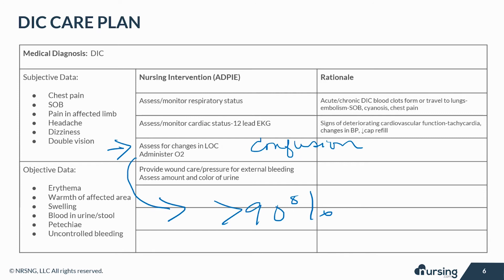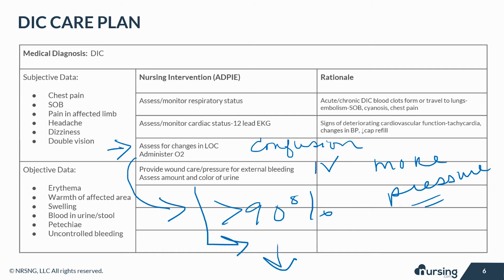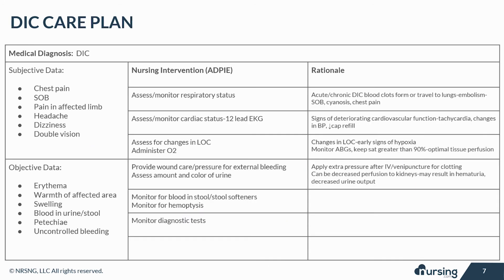With DIC, even the simplest procedures like a venipuncture or an IV can cause severe external bleeding. You must apply more pressure than normal to help with clotting in these situations. Assess the amount and color of your patient's urine, as there could be decreased perfusion to the kidneys, which may result in hematuria and decreased urine output of less than 30 mLs per hour. Monitor for blood in the stool — dark blood can indicate a GI bleed, while bright red blood may indicate hemorrhoids or anal fissures.